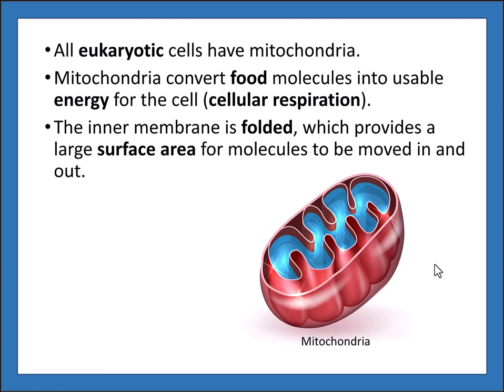The inner membrane of the mitochondria is folded, which provides a large surface area for molecules to be moved in and out. Because it is thin but wavy and stacked upon itself, there is much more surface area available in this fold than there would be in a straight membrane. We'll talk more about why that matters in future units.